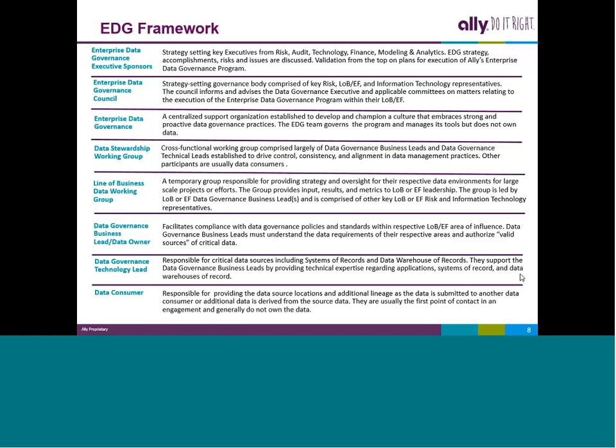Our key roles are: a data governance business lead who is the data owner from the business side, a data governance tech lead who is our technical expert around the system of origination or system of record, and a data consumer — the person plucking data and fulfilling a critical report. All three roles roll up into a line of business data working group, and all of them across the corporation create the data stewardship working group. Data governance is the strategic arm — we drive the strategy, create policies, standards, procedures, and tools.